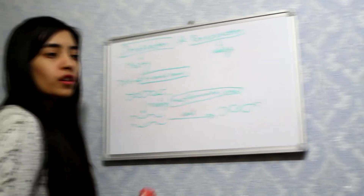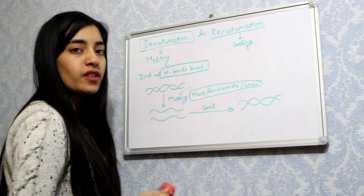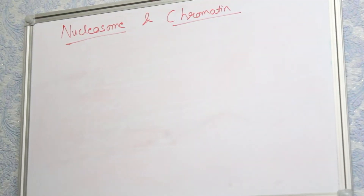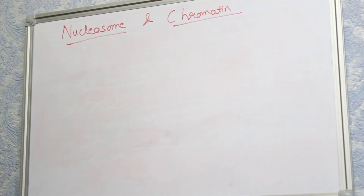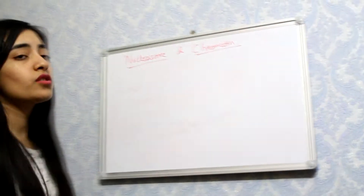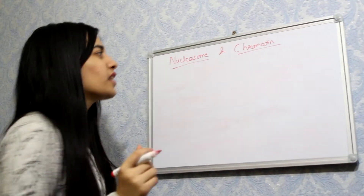Denaturation can be achieved by heating the DNA, or by using chemicals such as formamide or urea.